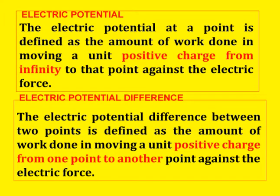Next, electric potential. The electric potential at a point is defined as the amount of work done in moving a unit positive charge from infinity to that point against the electric force. Electric potential difference means the work done in moving a positive charge from one point to another point against the electric force. This is a very important keyword — positive charge from infinity. This could be asked in three-mark questions.